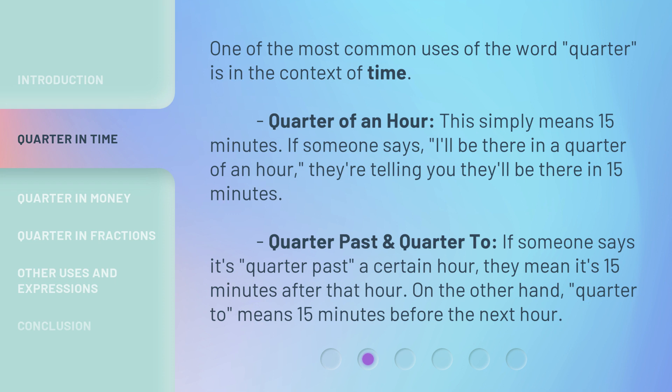Quarter past and quarter to. If someone says it's quarter past a certain hour, they mean it's 15 minutes after that hour. On the other hand, quarter to means 15 minutes before the next hour.